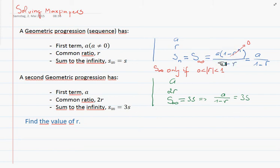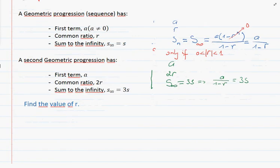We're using the same information we have here about the sum to infinity to say that a divided by 1 minus 2r will be equal to 3s.